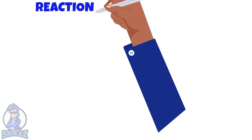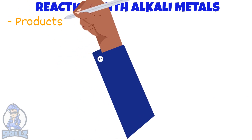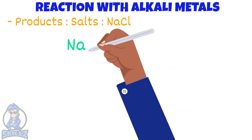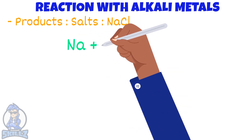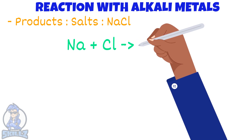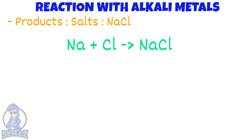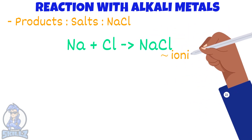We discussed alkali metals in the previous video. So when halogens react with alkali metals they form salts. For example, when the alkali metal sodium reacts with the halogen chlorine, we get the halide salt sodium chloride, which is an ionic solid.